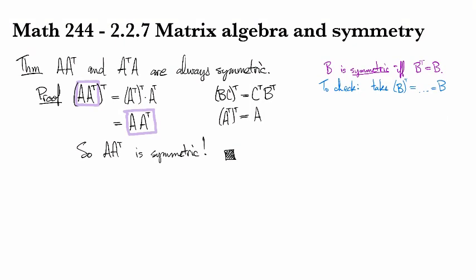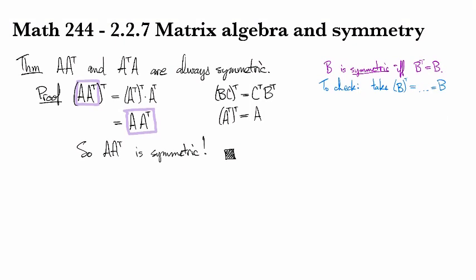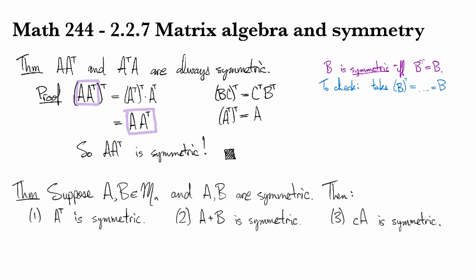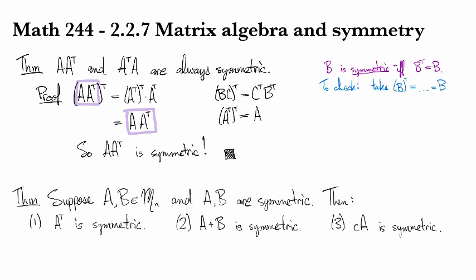Let's look at another result. Suppose that we have two square matrices of the same size—so suppose A and B are both n by n matrices for the same n—and suppose A and B are also symmetric. So we have two symmetric matrices of the same size. Then we know a bunch of things: first off, A transpose is also going to be symmetric, the sum will be symmetric, and a constant multiple will be symmetric, or a scalar multiple that is.